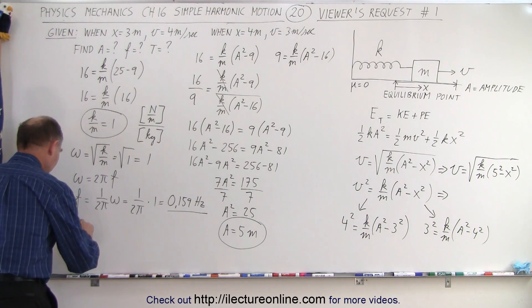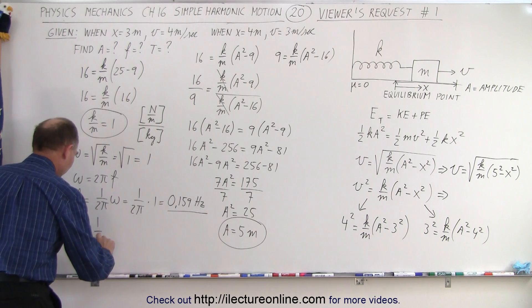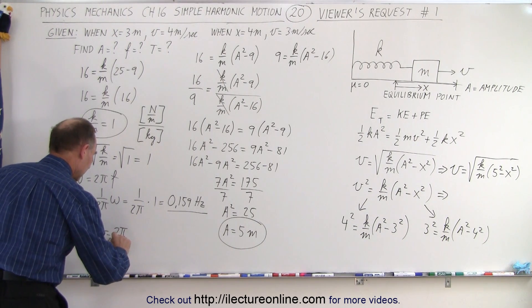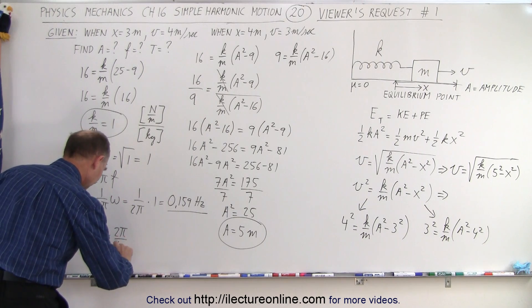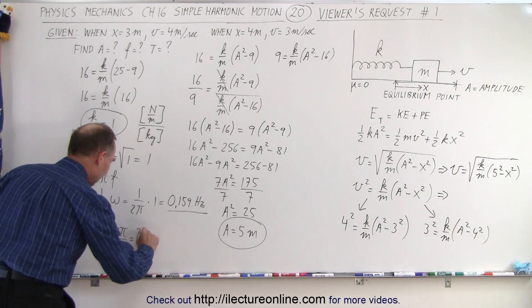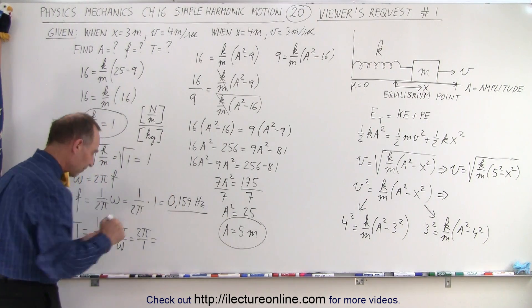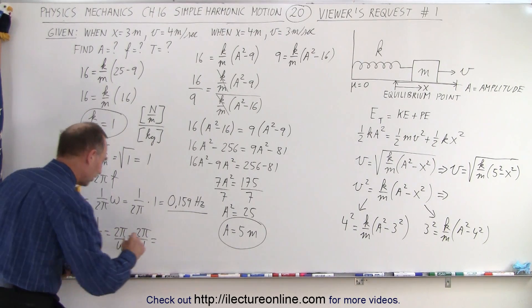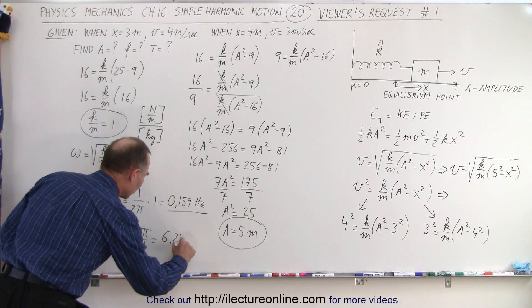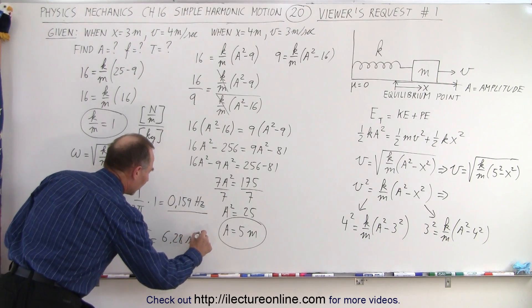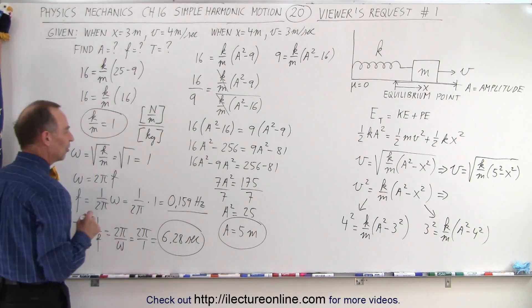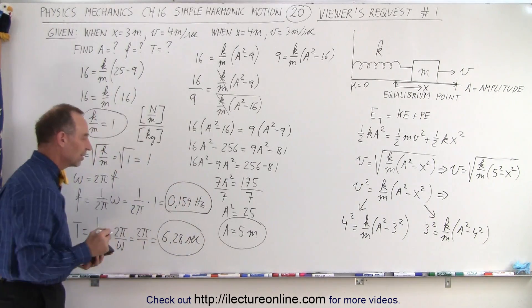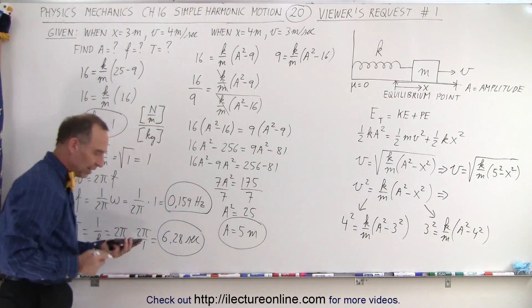Then if we want to find the period, which is equal to 1 over the frequency, which is equal to 2 pi divided by omega, which is equal to 2 pi divided by 1, which is simply the inverse of that. So take the inverse of that, and we get 6.28 seconds. So the period of oscillation is 6.28 seconds, the frequency is 0.159 hertz, and the amplitude is 5 meters.